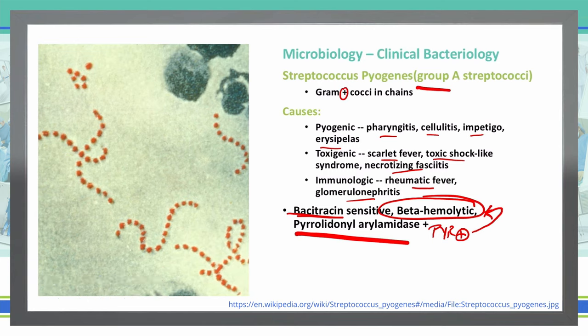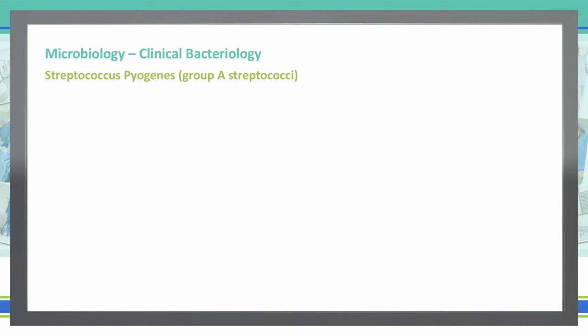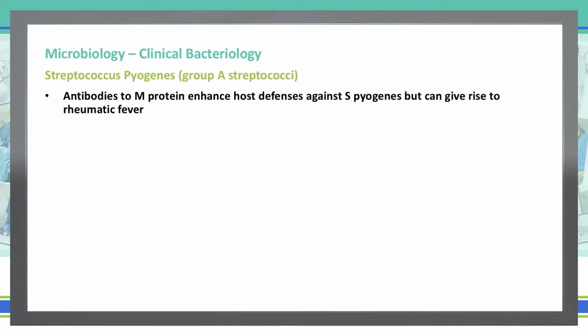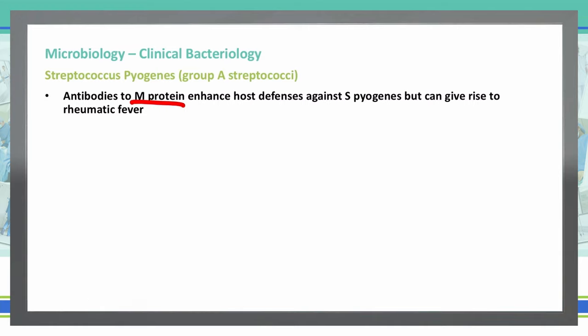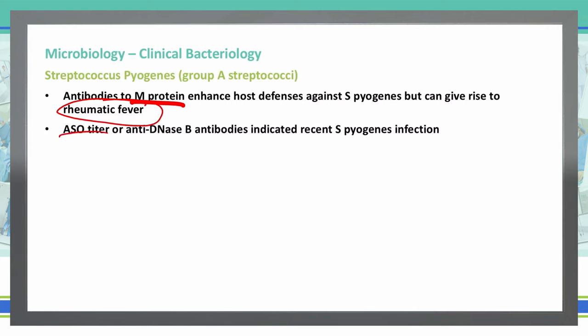What makes Streptococcus pyogenes more virulent is its ability to inhibit phagocytosis. It has a hyaluronic acid capsule and an M protein on the surface of the cell that help inhibit phagocytosis. Our body can produce antibodies against that M protein, but those antibodies actually give us the possibility of rheumatic fever developing. If you suspect a recent infection with Strep pyogenes, we can do an ASO titer or anti-DNase-B antibody to confirm.